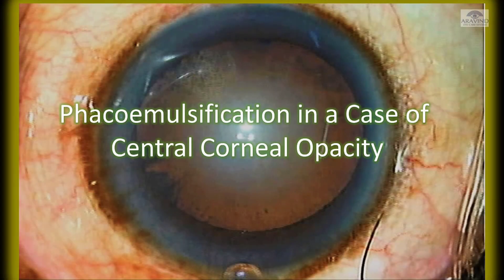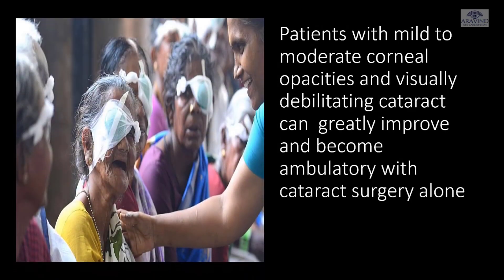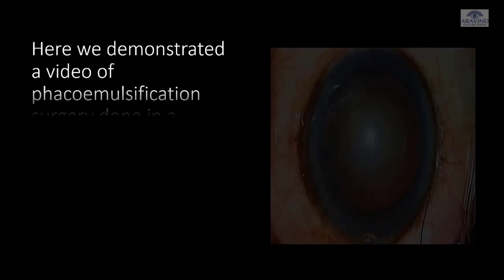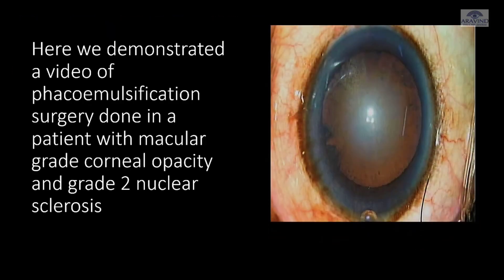Phacoemulsification in a case of central corneal opacity. Patients with mild to moderate corneal opacities and visually debilitating cataract can greatly improve and become ambulatory with cataract surgery alone. Here we demonstrate a video of phacoemulsification surgery done in a patient with macular grade corneal opacity and grade two nuclear sclerosis.